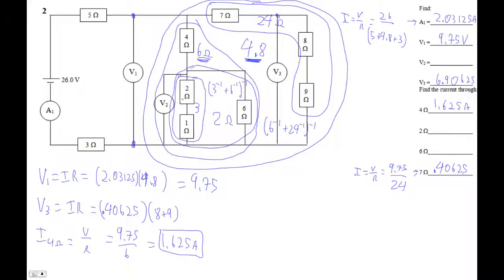So let's keep going. Let's find V2. So V2 is IR. And that's going to be the current that we just figured out, 1.625, times this resistance here, which is all of this resistance is 2. So times 2. V2 is 3.25.